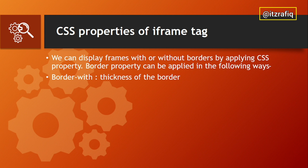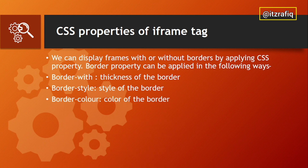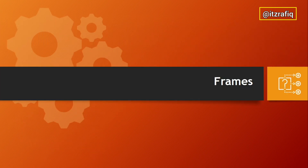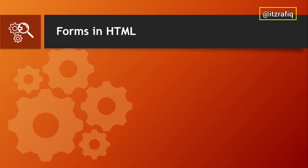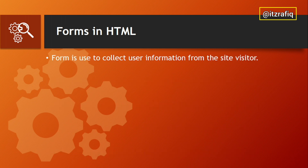We use the border property to change the iframe border. The border property is used in the following ways: border-width signifies the thickness of the border, for example '1px' means 1 pixel thick. Border-style signifies the style, such as solid, dashed, dotted, or double. Border-color specifies the color of the border.